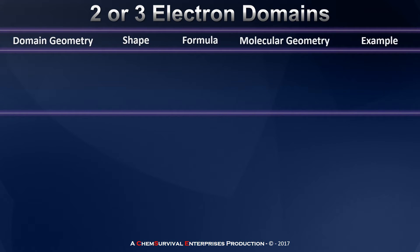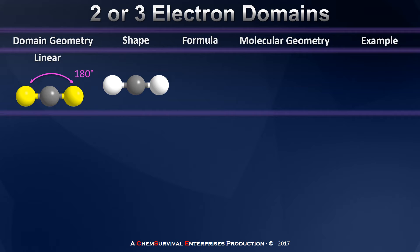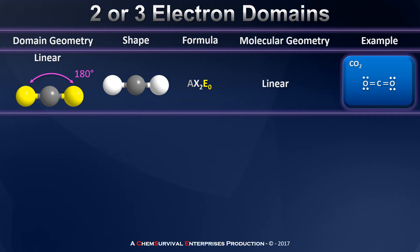We'll start with a very simple geometry: two electron domains. These two electron domains will spread themselves out as far as possible, creating a 180 degree angle between them, so we call this domain geometry linear. If both of those domains are bonding domains, then we have all three atoms in a straight line. So our AX2E0 compound will have a molecular geometry that's the same as the domain geometry, linear. An example of this is carbon dioxide, in which the central carbon atom has two electron domains, each participating in bonding to an oxygen atom.